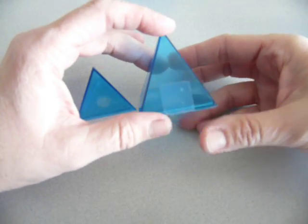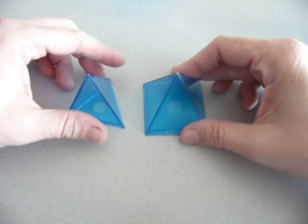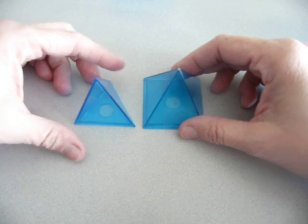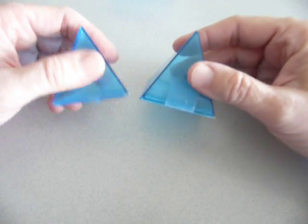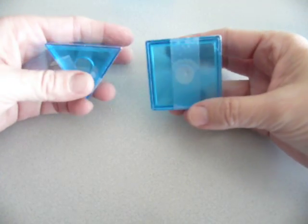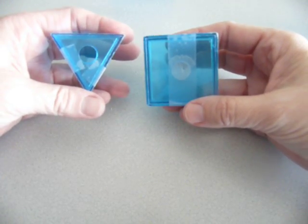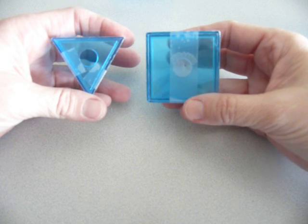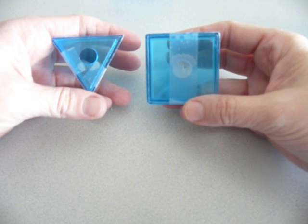They are, however, two different types of pyramids. One is a triangular pyramid and one is a rectangular pyramid. I know this because if I look at their bases, the triangular pyramid has a base that's shaped like a triangle and the rectangular pyramid has a base that's shaped like a rectangle.